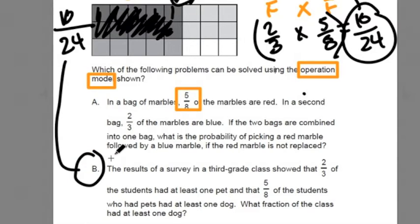It says here for B, the results of a survey in a third grade class showed that 2 thirds of the students had at least one pet, and that 5 eighths of the students who had pets had at least one dog. What fraction of the class had at least one dog?